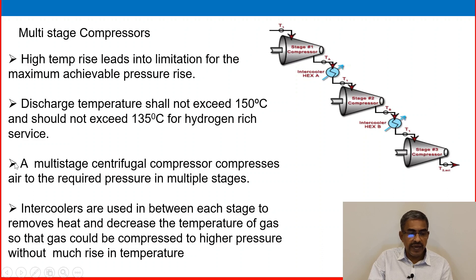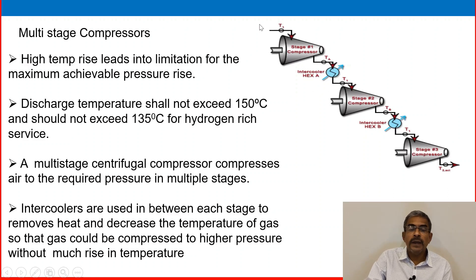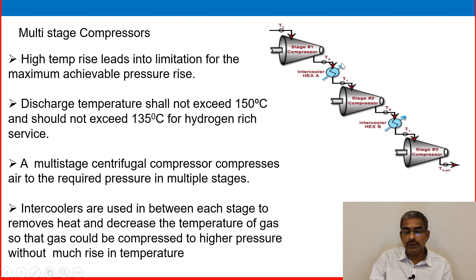Discharge temperature shall not exceed 150°C and should not exceed 135°C for hydrogen-rich services. A multi-stage centrifugal compressor compresses gas to the required pressure in multiple stages. Intercoolers are used between each stage to remove heat and decrease the temperature of the gas so that the gas can be compressed to higher pressure without much rise in temperature. When pressure increases in stage 1, temperature also increases, so we cool the gas between stages using an intercooler to bring temperature down before compressing again in stage 2.